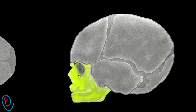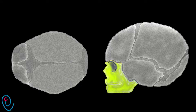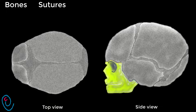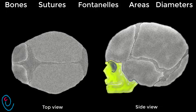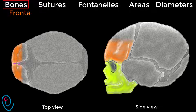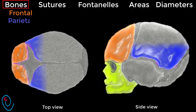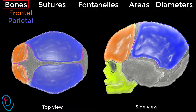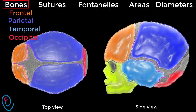The vault is the area of obstetric importance. It will be described in terms of bones, sutures, fontanels, areas, and diameters. Regarding bones, there are two frontal bones, two parietal bones, two temporal bones, and one occipital bone.